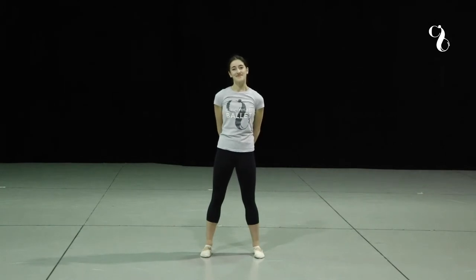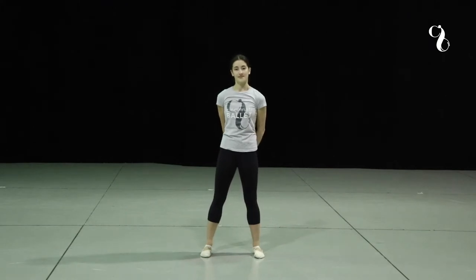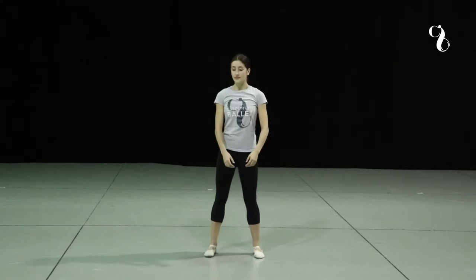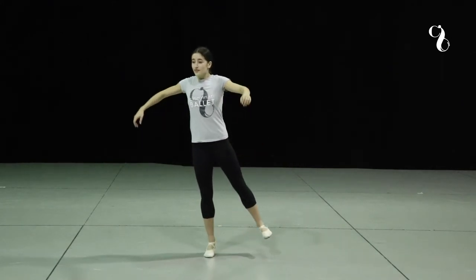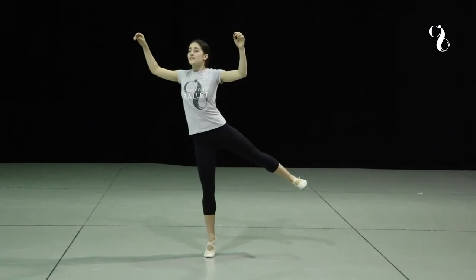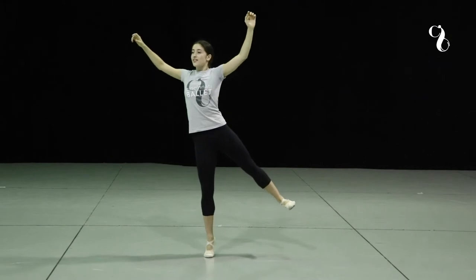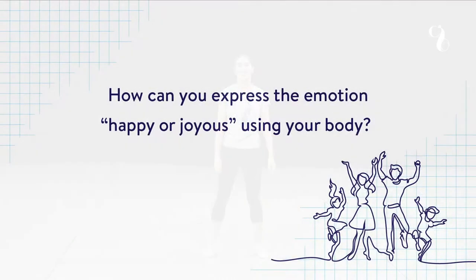Now we're going to ask her to try a more abstract version of the same emotion — happy or joyous — but I'm going to ask her to try to use all four limbs. I want all four limbs to be a part of it. So happy and joyous. Still uplifting. Now your happy and joyous might be totally different than Jaycee's, and that is absolutely okay. In fact, it's encouraged.